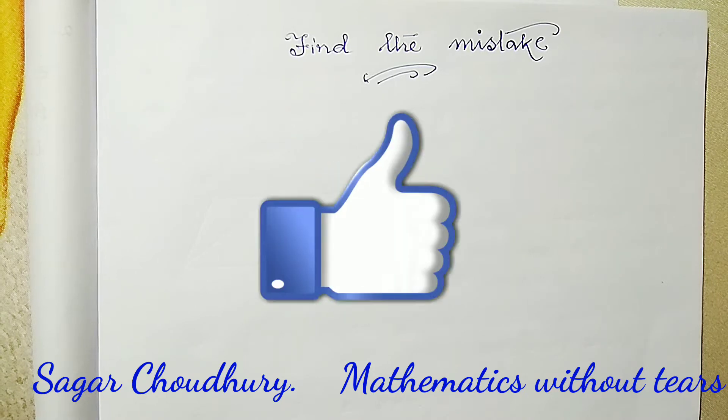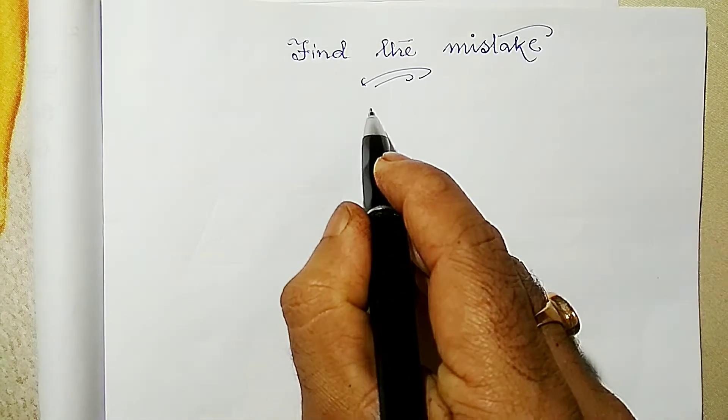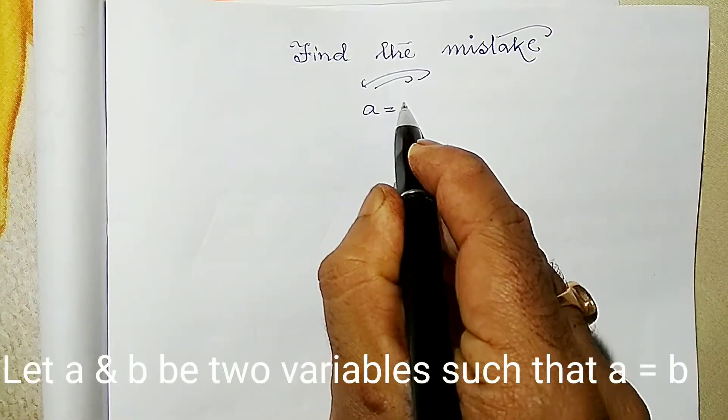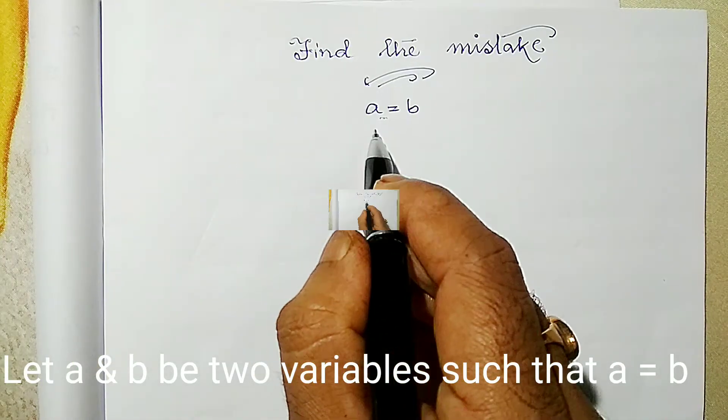Suppose I have considered a equals to b. Suppose a and b are two numbers or you can say variables also. Now if I multiply both sides by a, I am going to get a square equals to a into b.